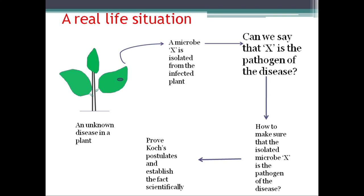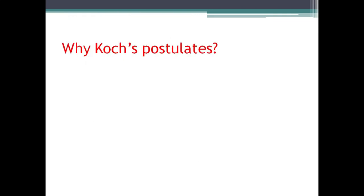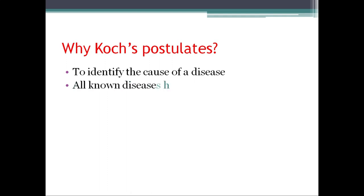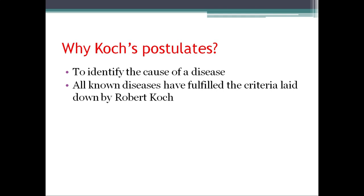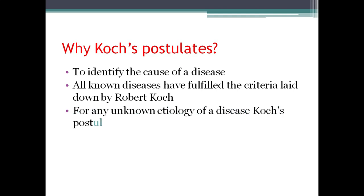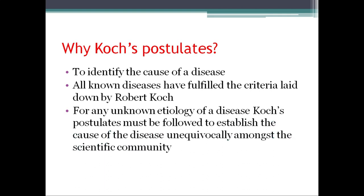Though Robert Koch worked with human and animal systems, the postulates given by him were equally applied in plant pathology. The basic purpose of Koch's Postulates, in simple words, is to identify the cause of disease. Most plant diseases we know today have passed through the conditions, rules, or criteria set by Robert Koch. For any unknown etiology of a disease, Koch's Postulates must be followed to establish the cause of the disease unequivocally amongst the scientific community.